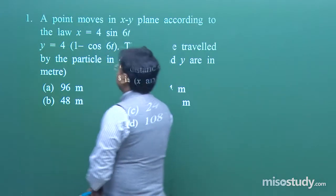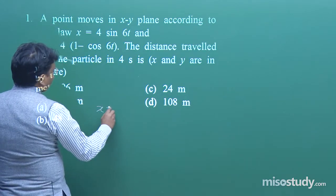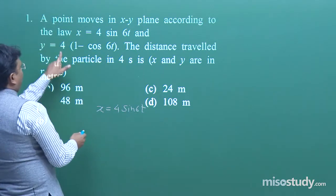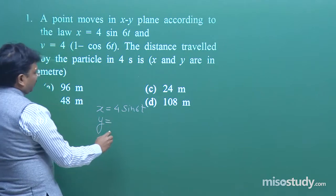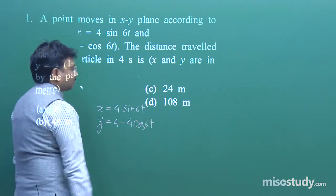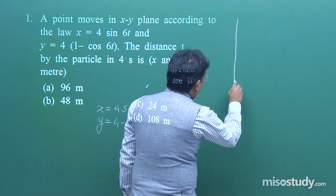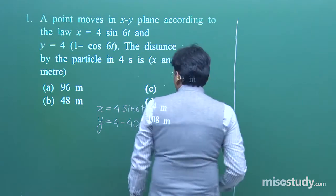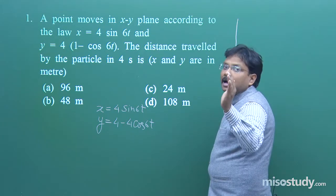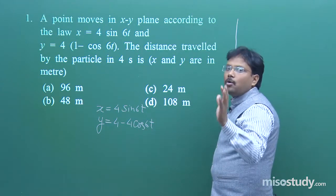From here let me translate the terms of the equation. One part is along the x direction — the displacement or motion is governed by x = 4 sin(6t) — and along the y direction it is y = 4 − 4 cos(6t).